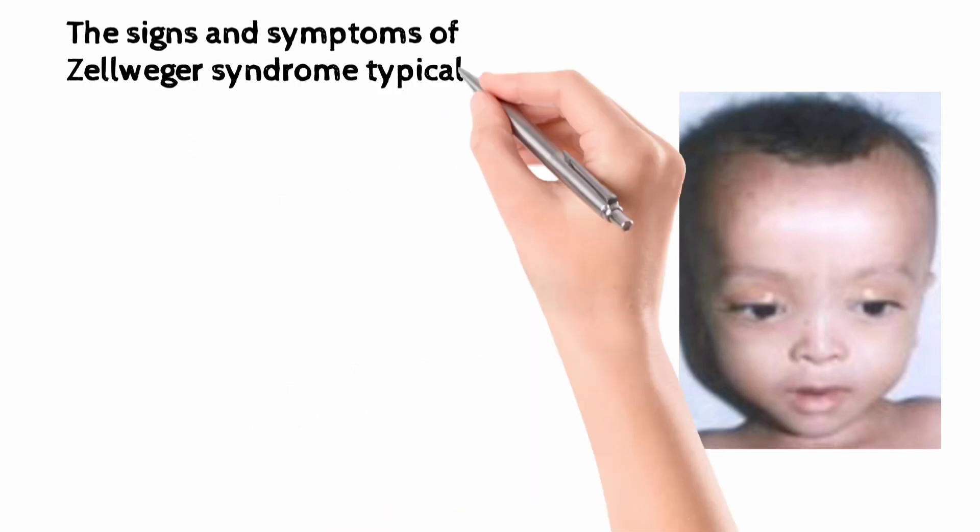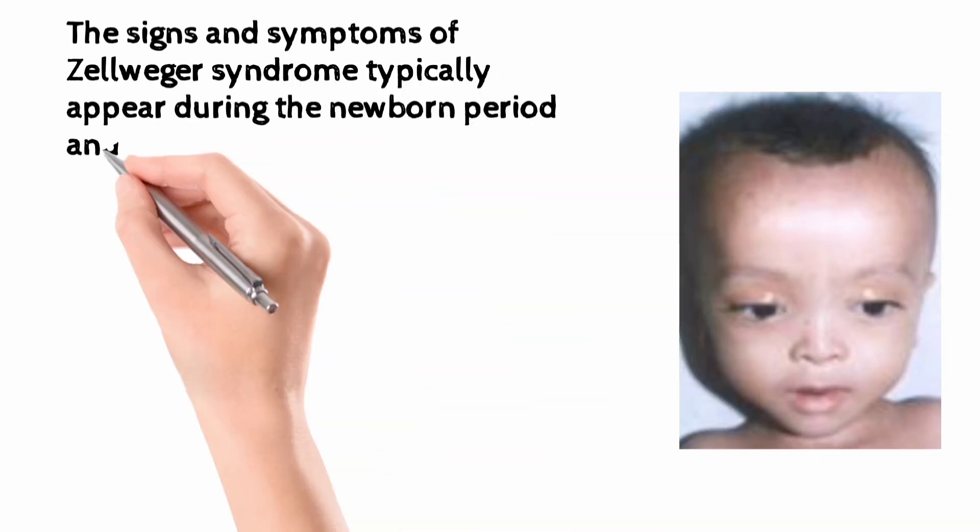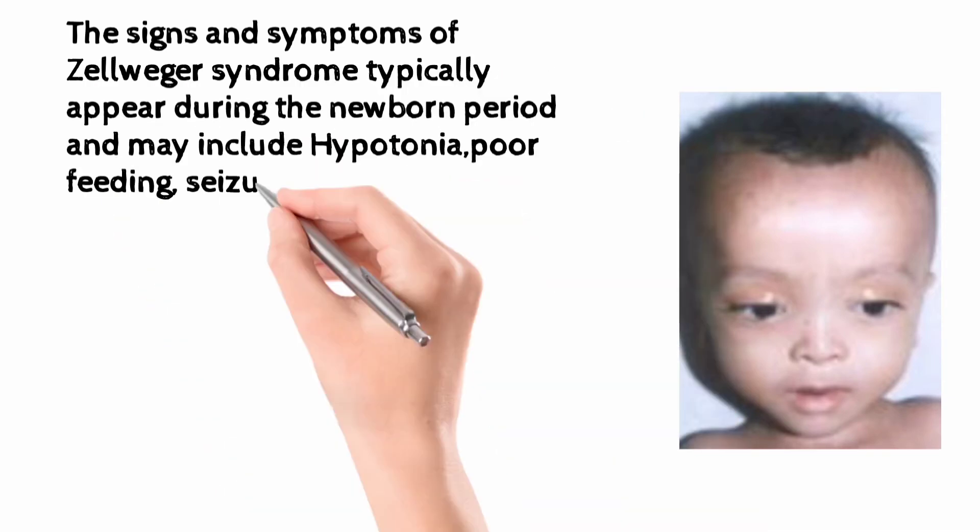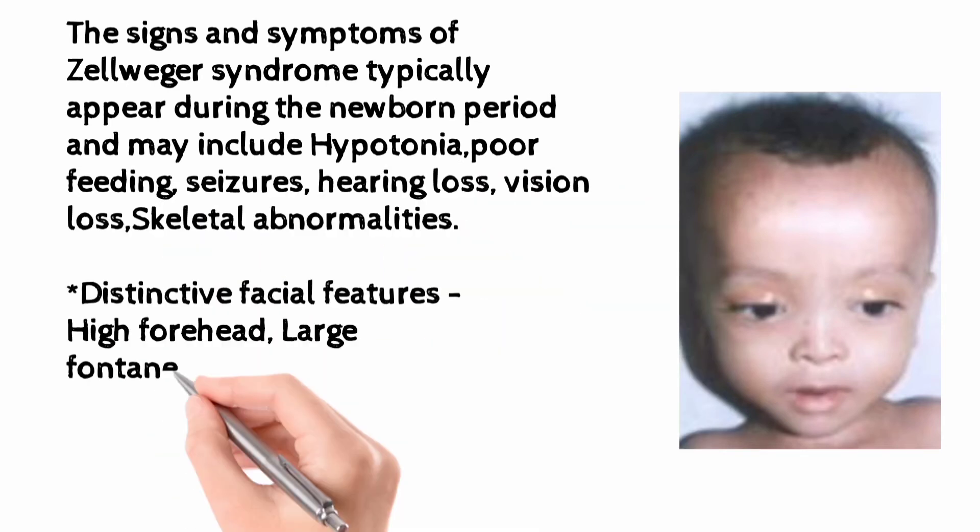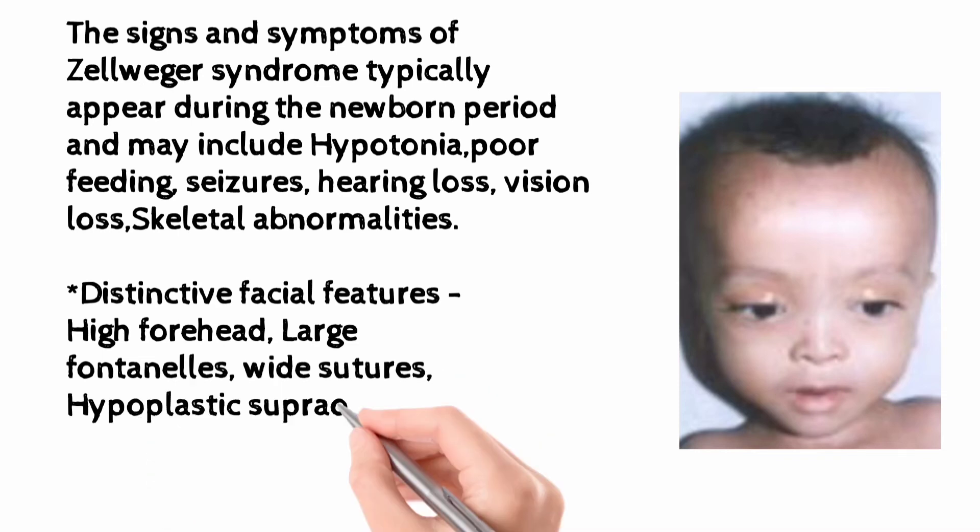The signs and symptoms of Zellweger's syndrome typically appear during the newborn period and may include hypotonia, poor feeding, seizures, hearing loss, vision loss, and skeletal abnormalities. Distinctive facial features include high forehead, large fontanels, wide sutures, hypoplastic supraorbital ridges, and broad nasal bridge.